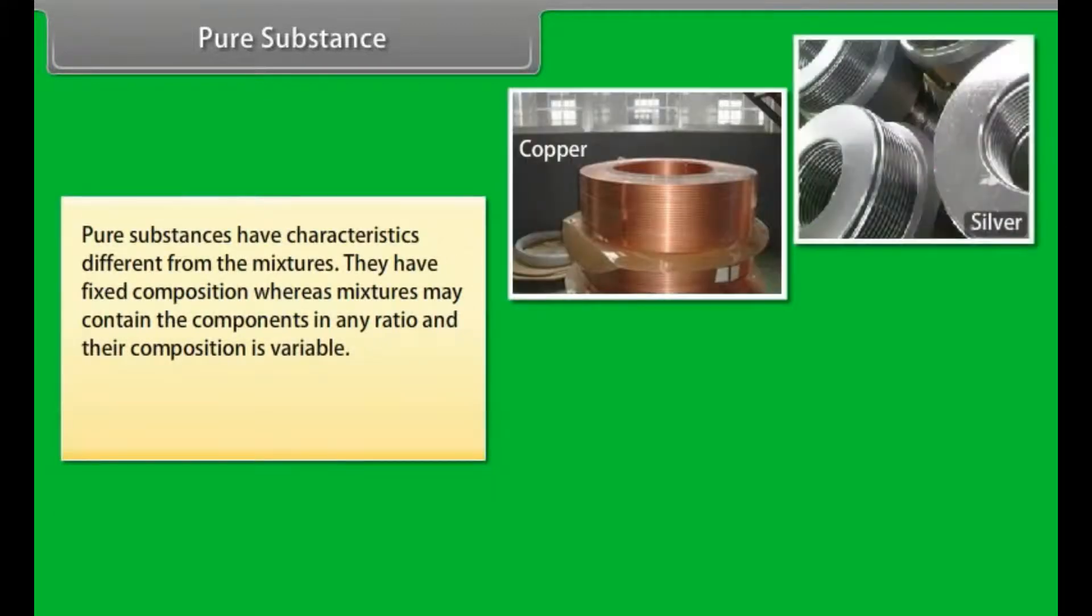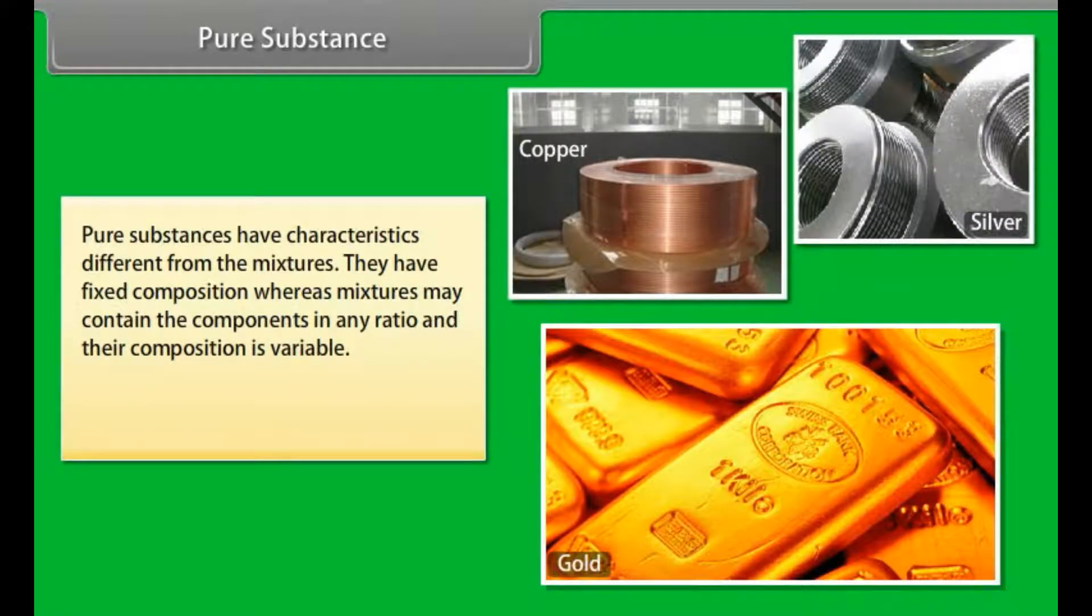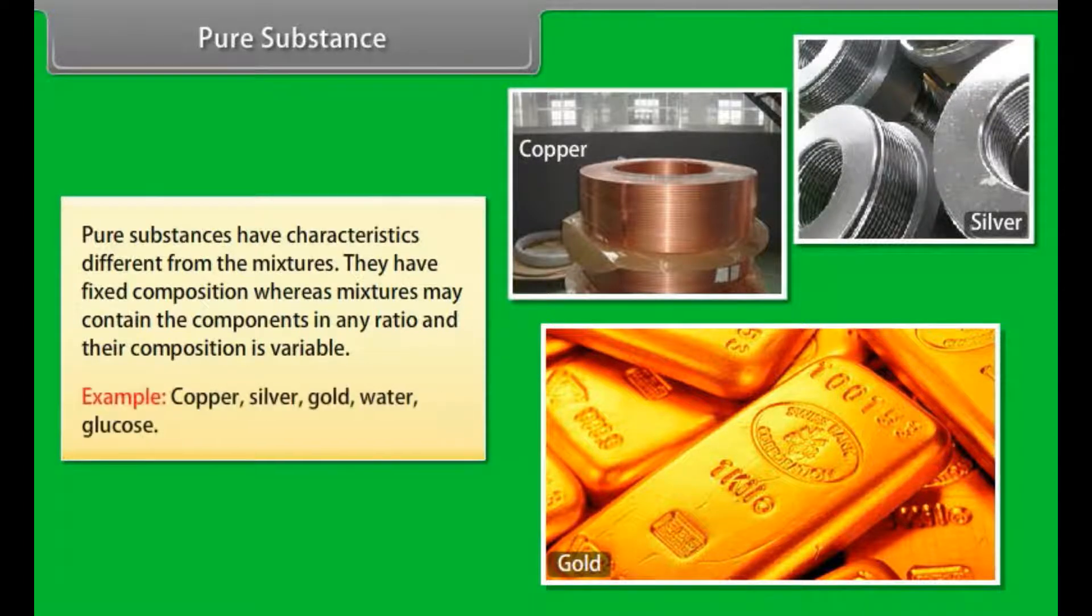Pure Substance: Pure substances have characteristics different from mixtures. They have fixed composition, whereas mixtures may contain the components in any ratio and their composition is variable. Examples: copper, silver, gold, water, glucose.